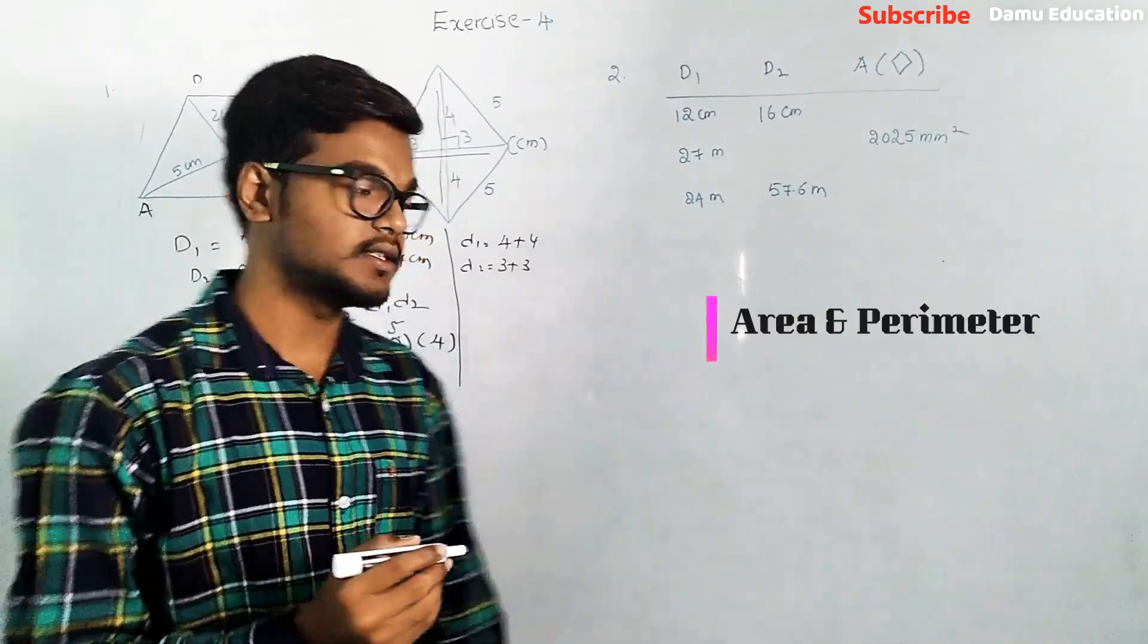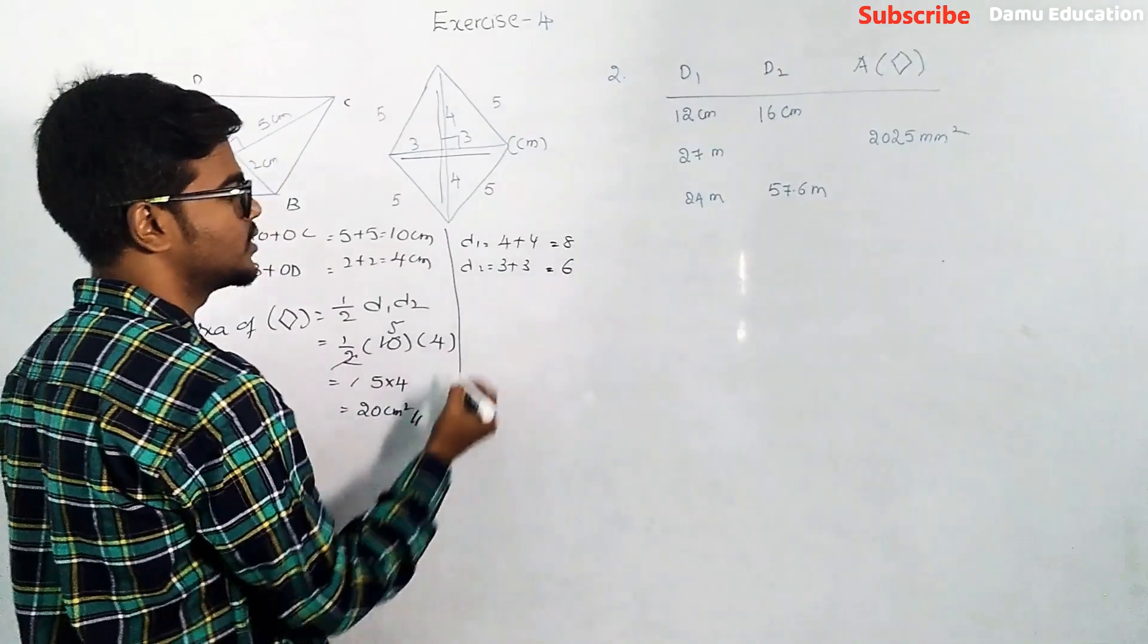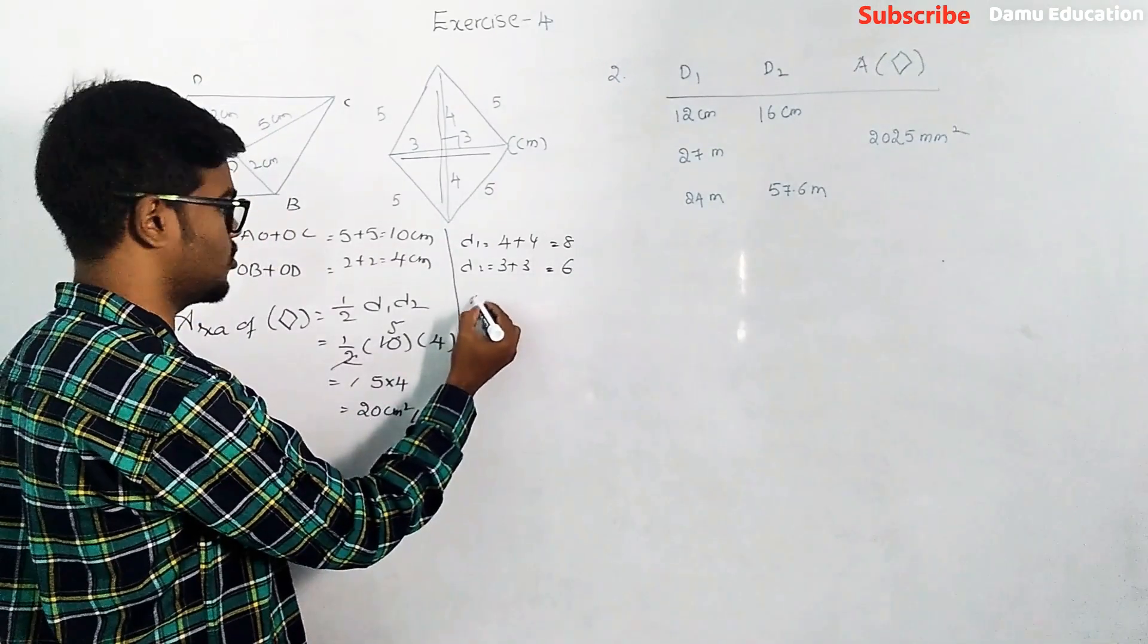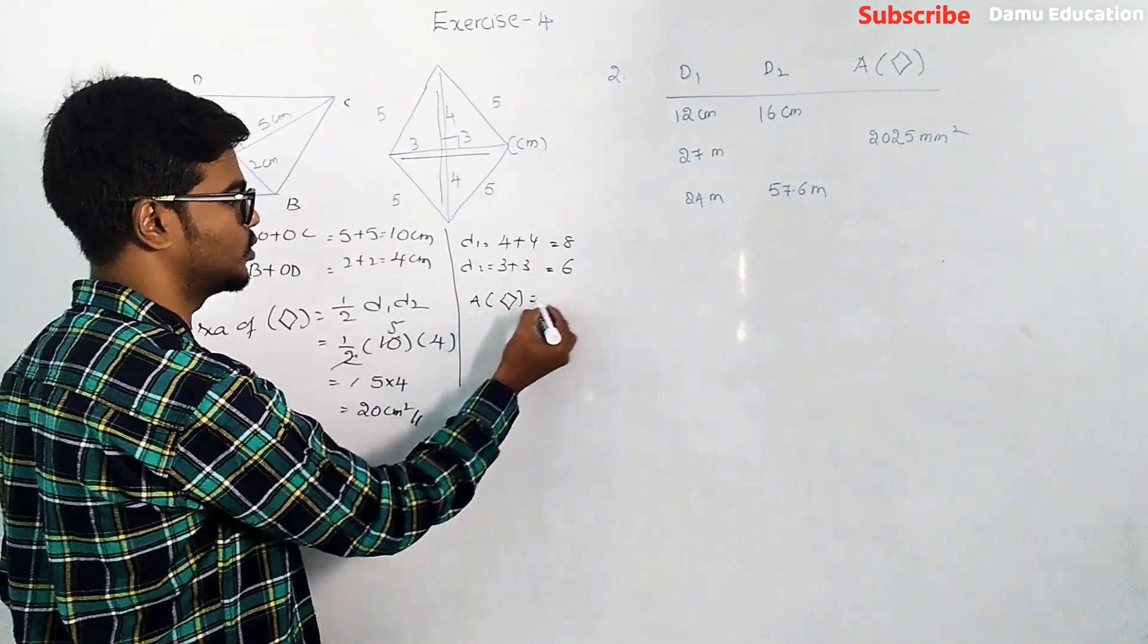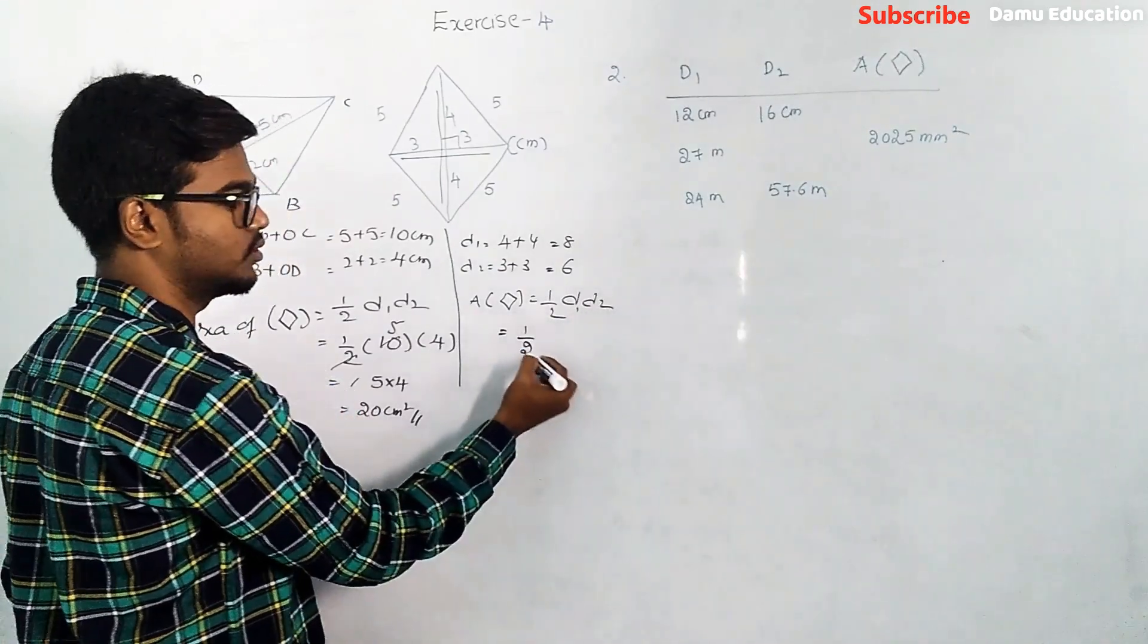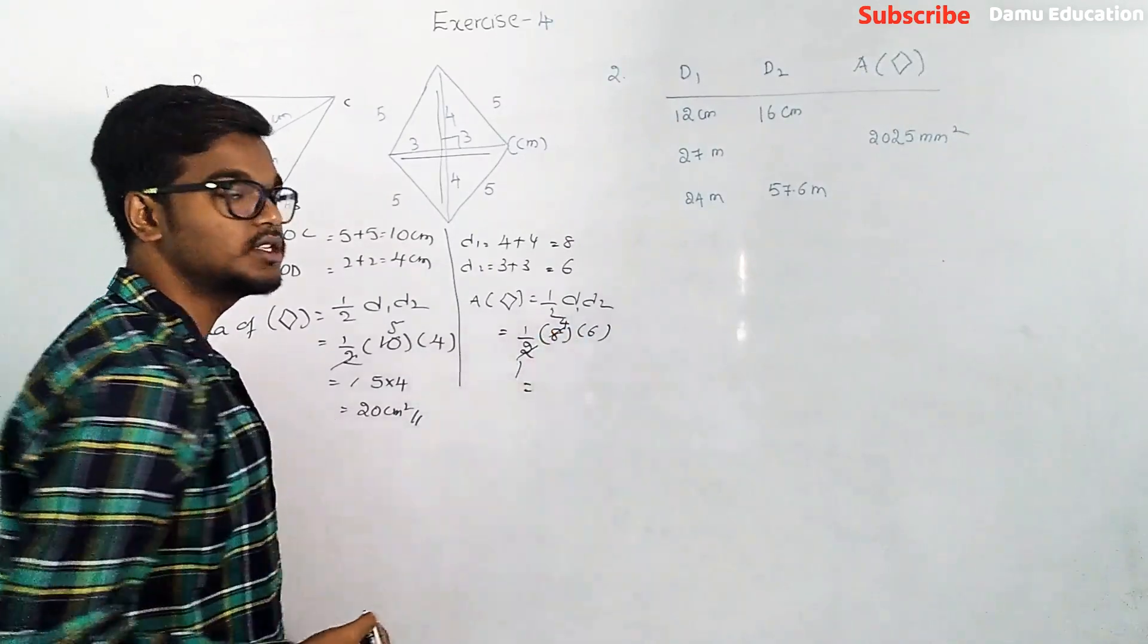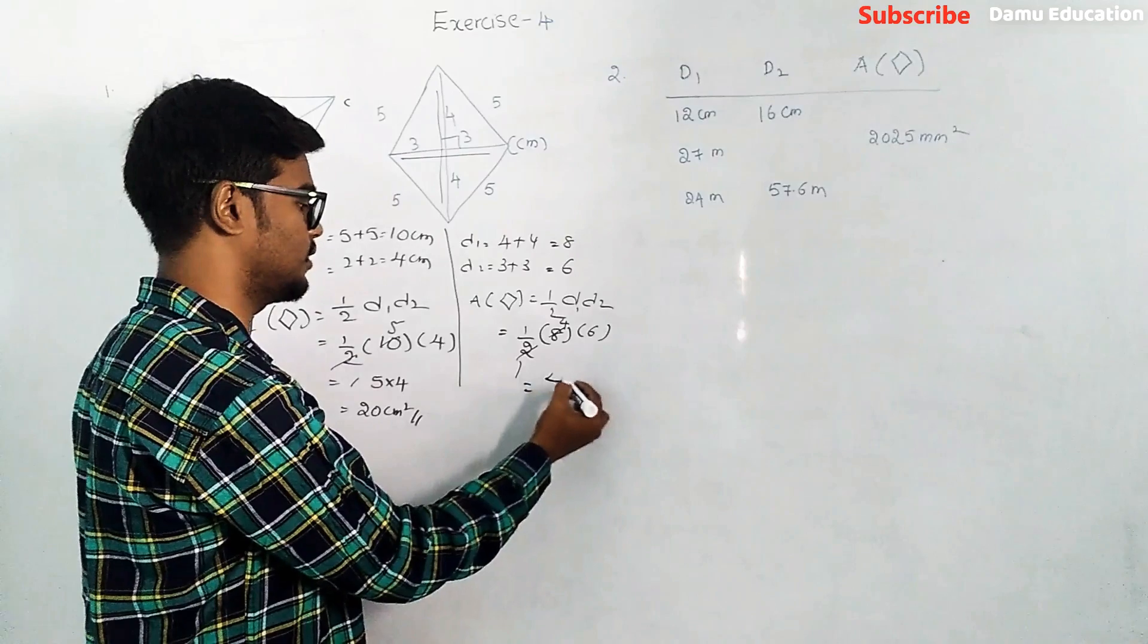Area of rhombus will be equal to half into d1 times d2, so half into 8 times 6. 2 goes into 8 four times, 4 into 6 will be 24 centimeter square.